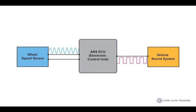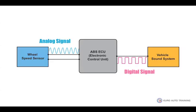The wheel speed signal is then passed to the sound system. If the wheel speed sensor produces an analog signal, it would be likely that the ABS ECU would then convert that speed signal to a digital signal for use within the ABS ECU, but that digital signal would also be passed to the sound system via conventional wiring.